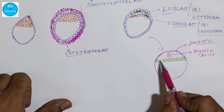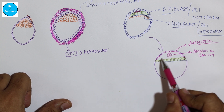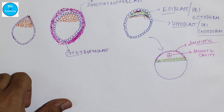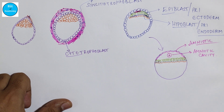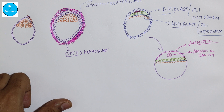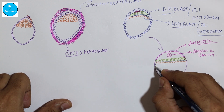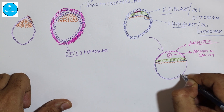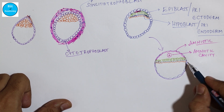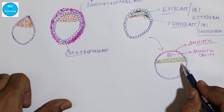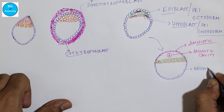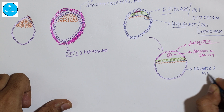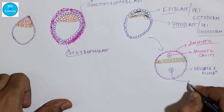The amniotic cavity is bounded on one side by the epiblast and on the other side by the amniotic membrane, which is derived from the cytotrophoblast. At the same time, there is formation of one more membrane towards the hypoblast layer. Some say it is derived from the trophoblast or cytotrophoblast, whereas some say it is derived from the primitive endoderm layer itself. This membrane is called Heuser's membrane, and the cavity formed here is called the yolk sac.